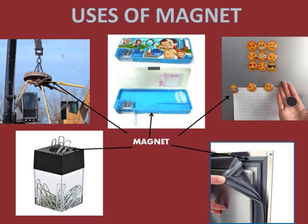Uses of Magnet: You can see the crane in the figure, and pieces of iron junk are sticking to the block as it moves away. A piece of magnet is attached to the end of the crane, and that is used to pick up the iron junk from the yard.